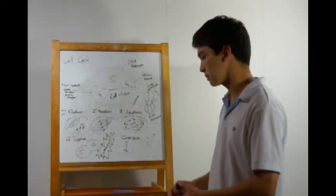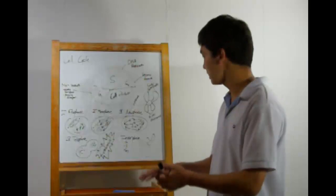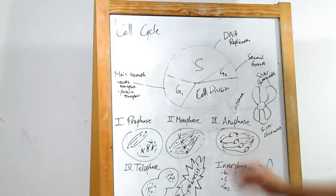In anaphase, the spindle fibers start to contract, and you actually see the chromosomes get pulled to opposite ends of the cell.